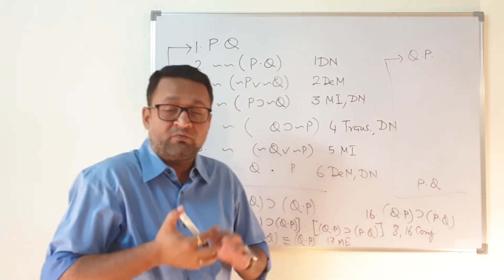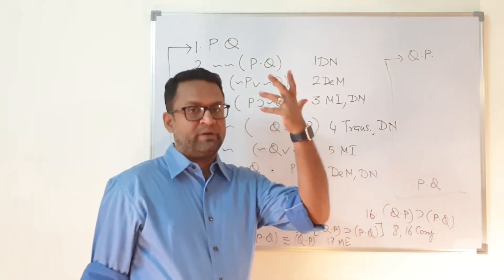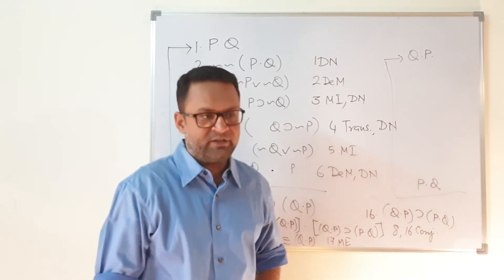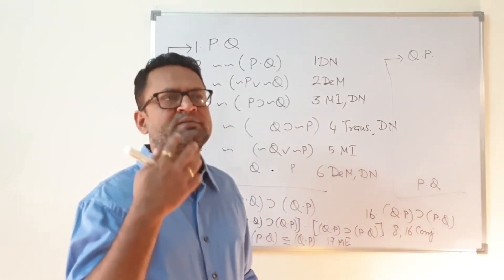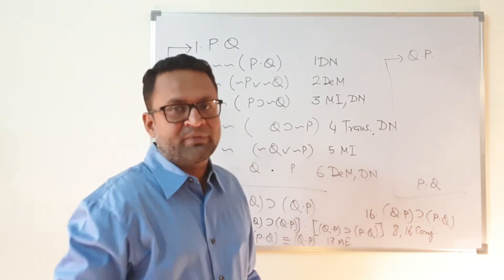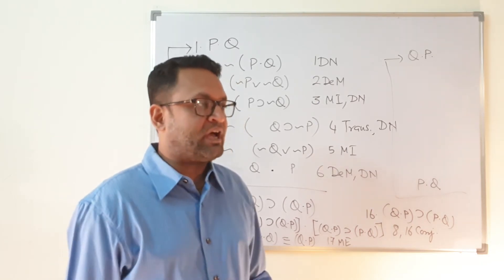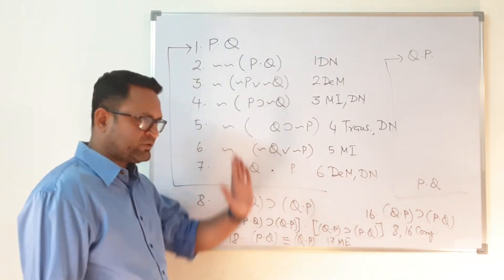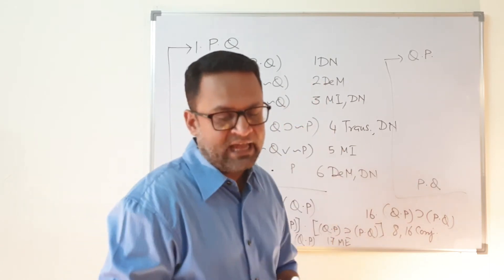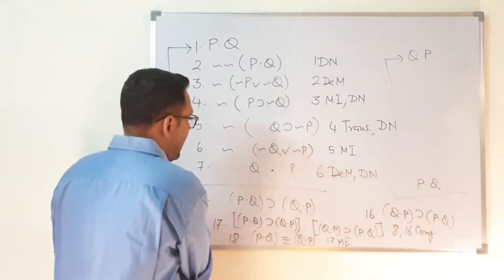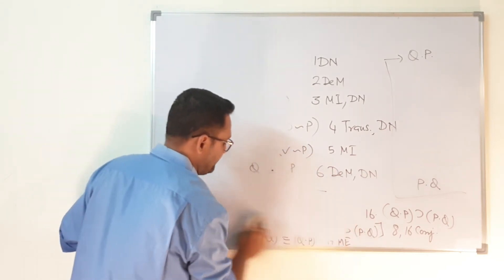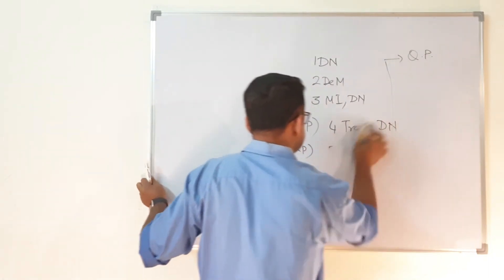The reason we cannot prove material equivalence is that we will always end up using material equivalence at the very last step of any such proof. So I do not know how to prove material equivalence without using material equivalence — it will always appear at the end. That is the thing I wanted to bring to your attention. This question is fairly simple, but you need to understand the underlying idea.